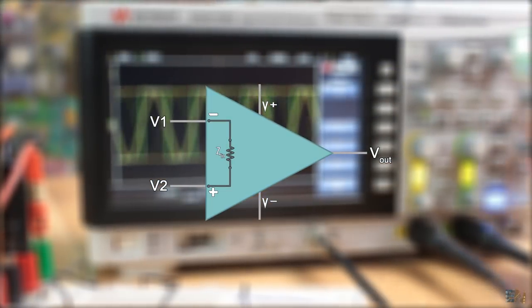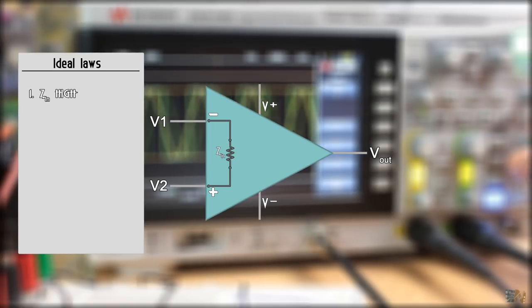First ideal spec of the amplifier is that its input impedance is practically infinite, so no current could flow towards the amplifier on the input rails.